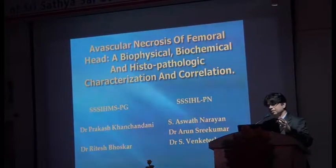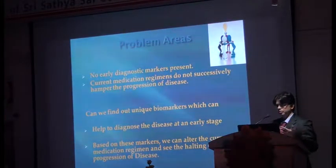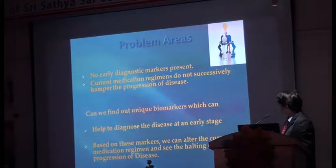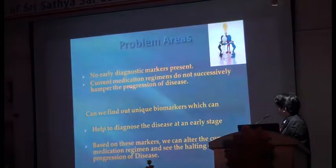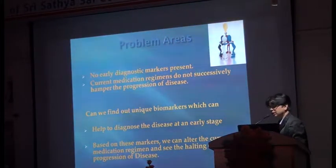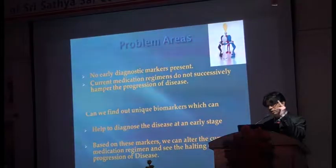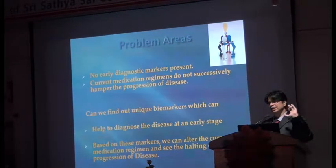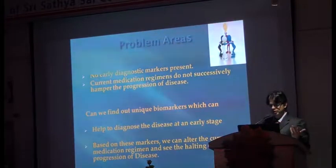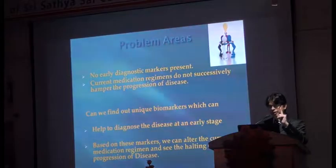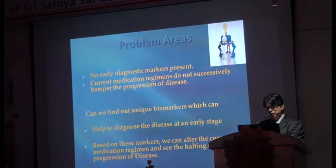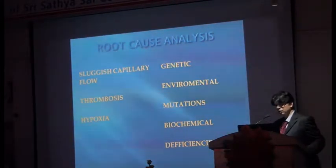I'll briefly present this unpublished data. We identified the problem areas: there is no early diagnostic marker, and current medication regimes do not successfully halt the progression of disease. Can we find a unique biomarker to diagnose the disease early, or to diagnose it in the predisposed population? Based on these markers, can we alter the current medication regime to halt disease progression?